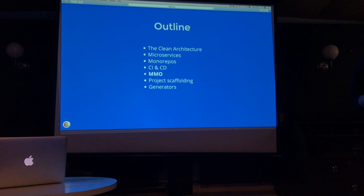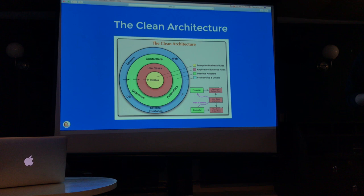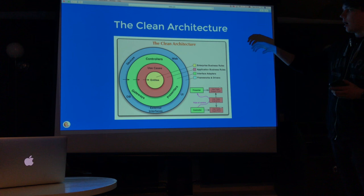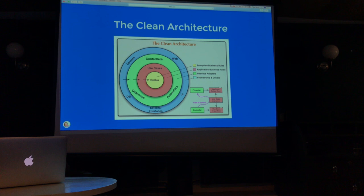So, clean architecture. What clean architecture does is when you look at the core, you want these parts of your code to be as independent as they can be. Why? Because these are your enterprise rules or your business rules. This means that you want this to be independent of the database and framework and UI and anything that you have in your code.